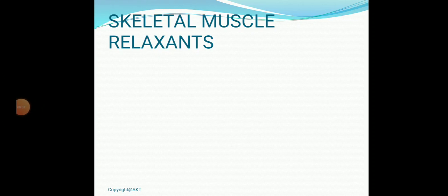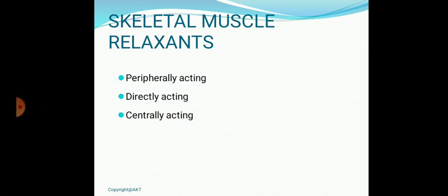Skeletal muscle relaxants are drugs which produce relaxation of skeletal muscles. They can be classified broadly as peripherally acting, directly acting, or centrally acting. Peripherally acting drugs produce purely neuromuscular blockage — they block the neuromuscular junction and relax the muscle up to the level of paralysis. Directly acting and centrally acting skeletal muscle relaxants do not produce paralysis but relieve spasm due to excessive skeletal muscle contraction.